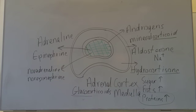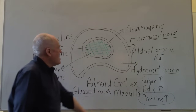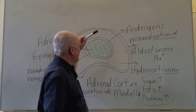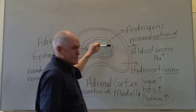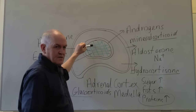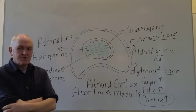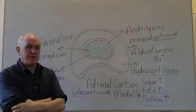The adrenal gland is quite complicated. Remember the cortex and the medulla: aldosterone, hydrocortisone, and androgens from the cortex; adrenaline and noradrenaline — also called epinephrine and norepinephrine — from the medulla.